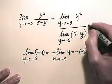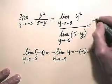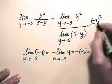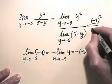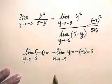Well, negative five squared, of course, is twenty-five. Five plus five is ten. And so we end up with twenty-five tenths, which of course we could cancel to five halves.